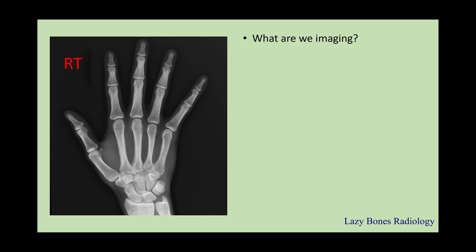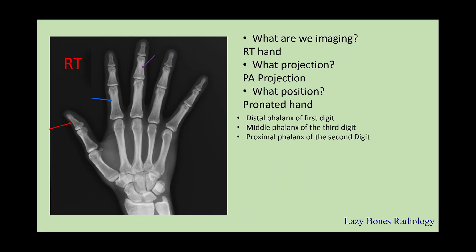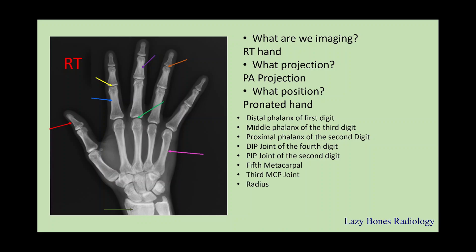Let's practice. What are we imaging? This is the right hand. What is the projection? This is a PA projection. What is the position? The hand is pronated with the fingers separated. Now let's practice some anatomy: distal phalanx of the 1st digit, middle phalanx of the 3rd digit, proximal phalanx of the 2nd digit, DIP joint of the 4th digit, PIP joint of the 2nd digit, 5th metacarpal, 3rd MCP joint, radius, and ulna. It is very important to be familiar with the anatomy, as on a test you will have to be able to identify the actual anatomy.